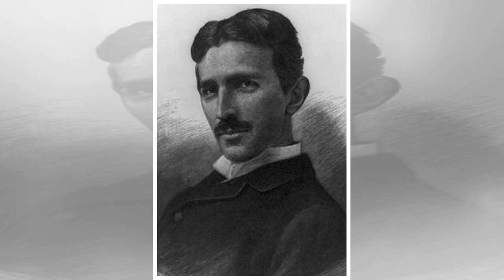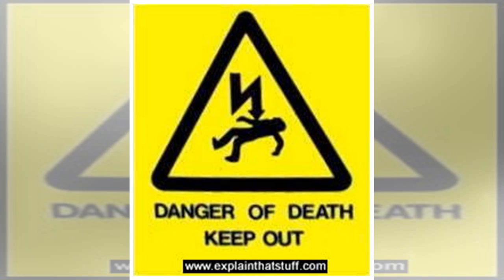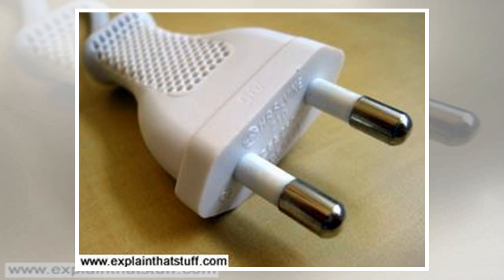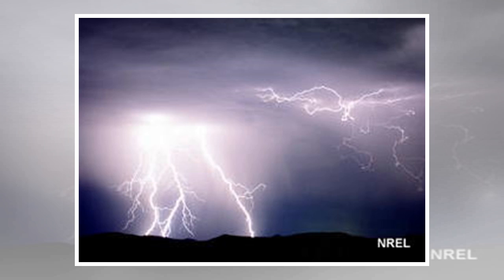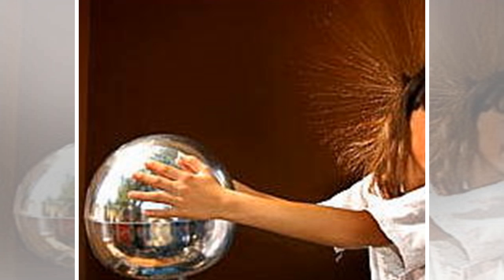A classic demonstration of static electricity you may have seen in your school: When this girl touches the metal ball of a Van de Graaff static electricity generator, she receives a huge static electric charge and her hair literally stands on end. Each strand of hair gets the same static charge and like charges repel, so her hairs push away from one another.